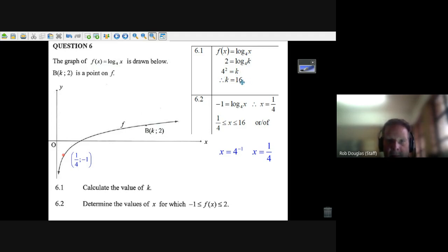Now they say determine the values of x which will create y values between two and minus one. Well, what you have to do is try and figure out the x value that's going to make a y value of minus one.